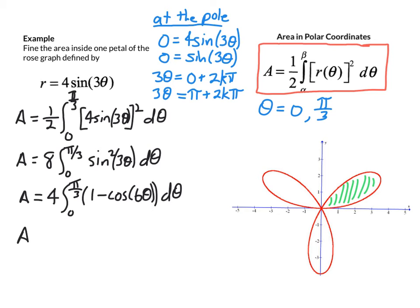Then we take the antiderivative with respect to theta. So this would be theta minus 1 sixth times the sine of 6 theta. And we're going from 0 to pi over 3. And then evaluate.